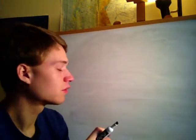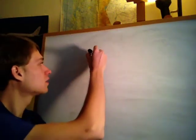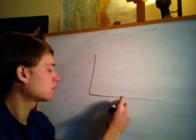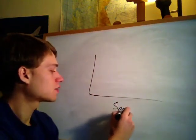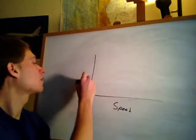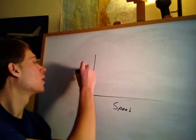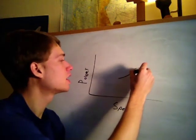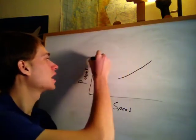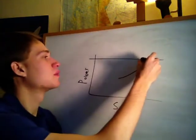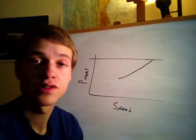Thrust is related to fuel flow. If you floor the gas pedal in a car you burn more gas — same on an airplane. At full throttle you burn more fuel. The faster you go, the more power you have to use to sustain that speed. You use more and more throttle as you increase speed, until you reach maximum throttle and can't go any faster.